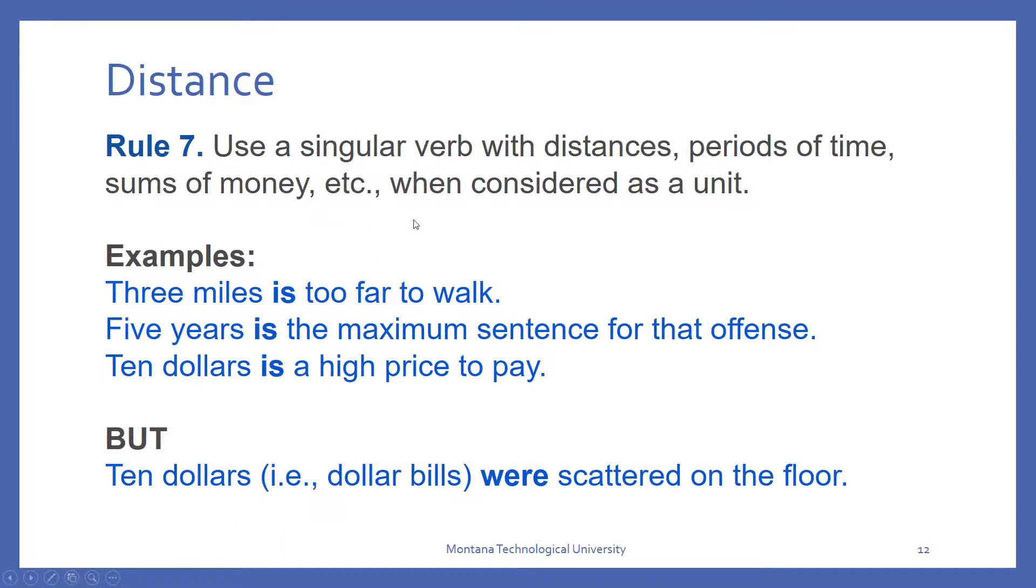Distance. We always use a singular verb with distances, periods of time, sums of money, when they are considered a unit. Three miles is, five years is, ten dollars is. But, in the case where ten dollars were scattered on the floor, we mean that ten one dollar bills were scattered around, and in that case, they are plural.